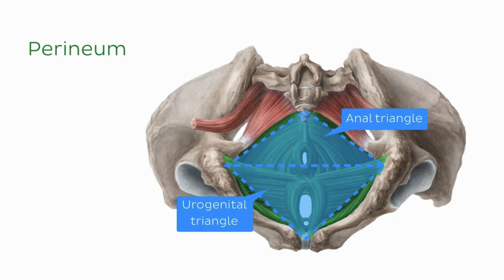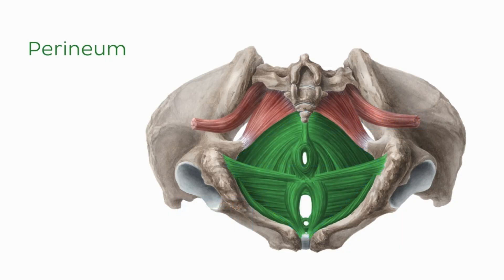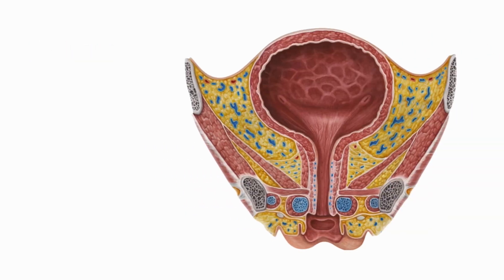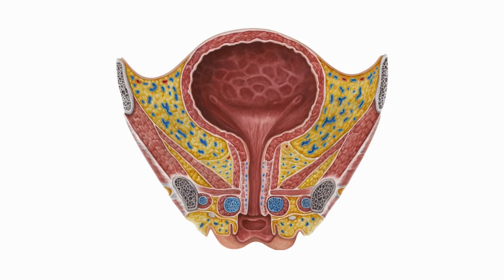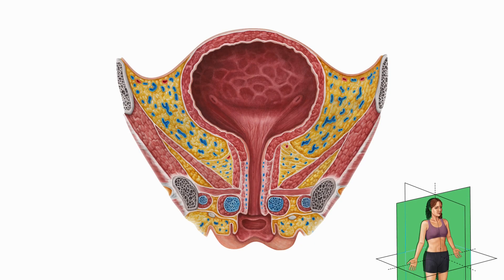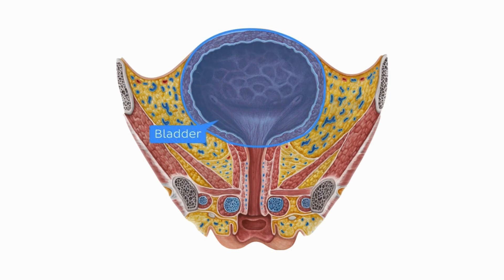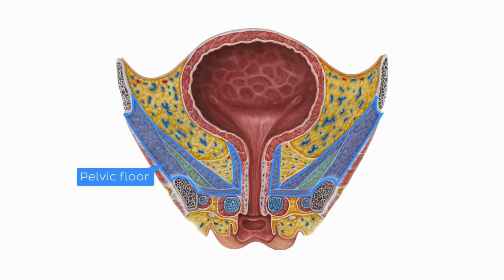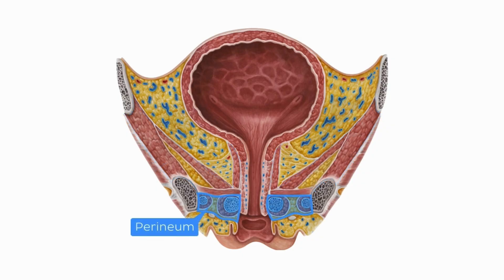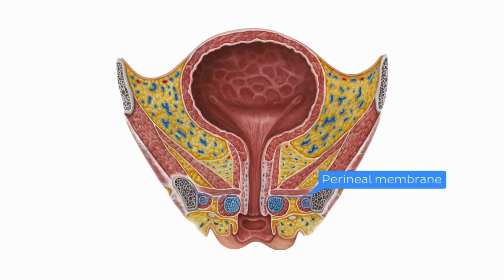Within the urogenital triangle, we can further divide the space into two parts. In this image, we're looking at the female pelvis and perineum cut in the coronal plane. This is the bladder sitting within the pelvis, which is bounded inferiorly by the pelvic floor. Inferior to the pelvic floor is the perineum, and since we're located anteriorly, we're in the urogenital triangle. The dividing line between the two spaces within the urogenital triangle is the perineal membrane.